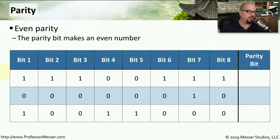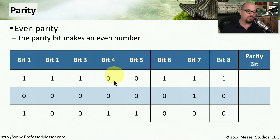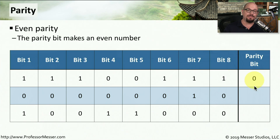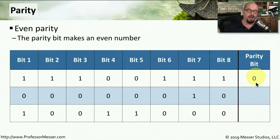For example, take the first byte: 1, 1, 1, 0, 0, 1, 1, 1. Counting the ones gives us 6, which is an even number, so we don't need to add any additional ones to make it even. Therefore, the parity bit in this case will be 0.